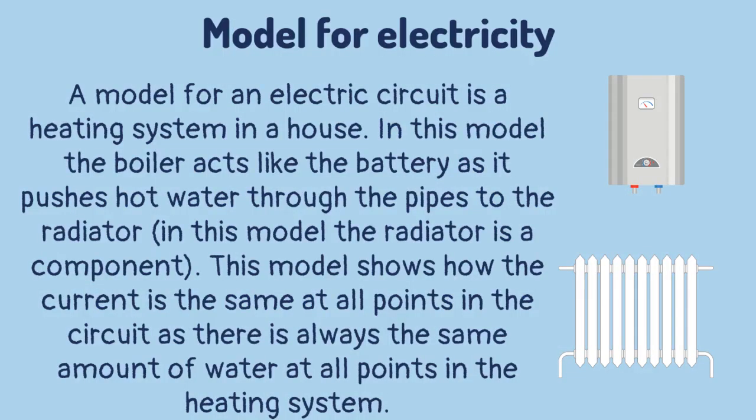A model for an electric circuit is a heating system in a house. In this model, the boiler acts like the battery, as it pushes hot water through the pipes to the radiator. In this model, the radiator is a component. This model shows how the current is the same at all points in the circuit, as there is always the same amount of water at all points in the heating system.